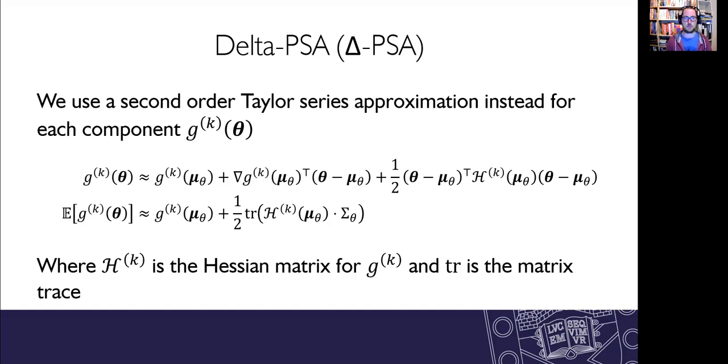Now, in this case, we're looking one component at a time. So g superscript k would be one of the outputs from the model. And the thing that we're adding this time round is the Hessian matrix. So this is h superscript k. That's the second partial derivative of that particular component of the function with respect to the parameters.